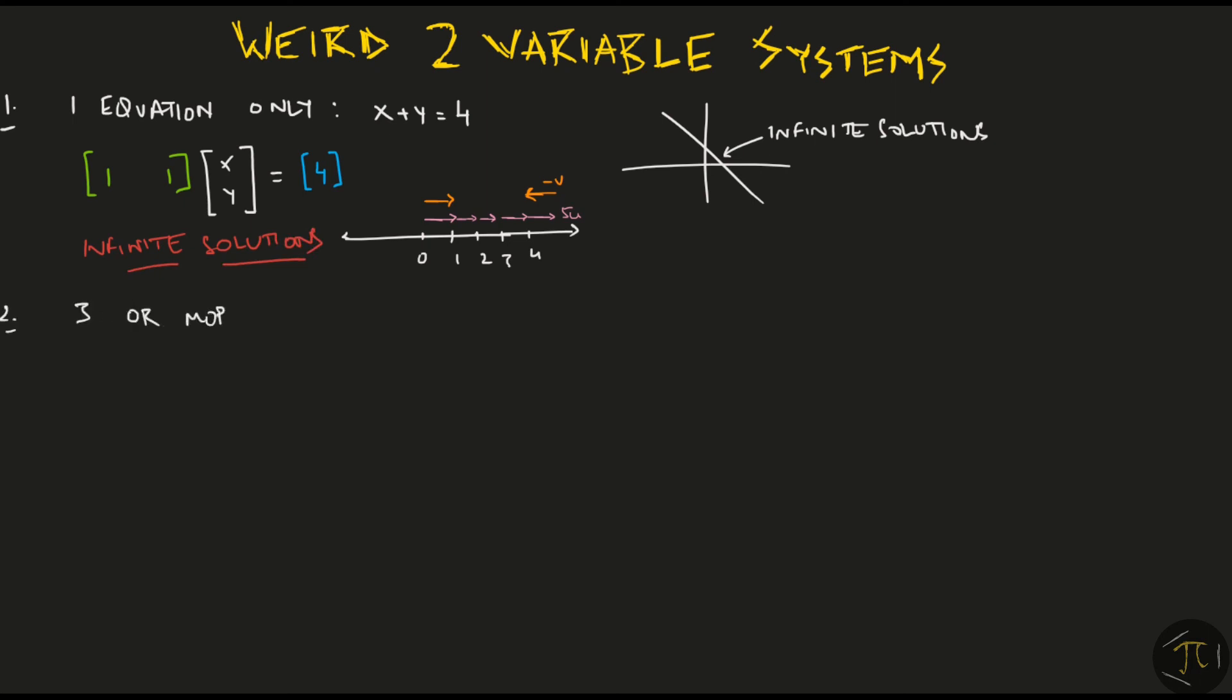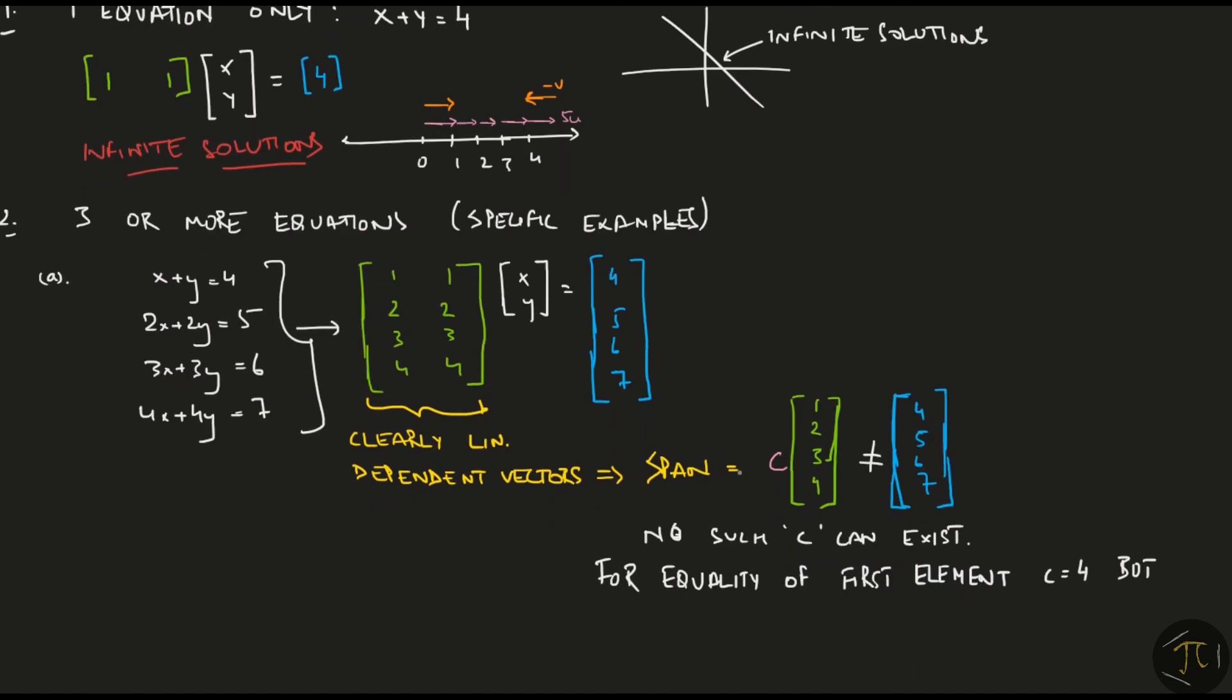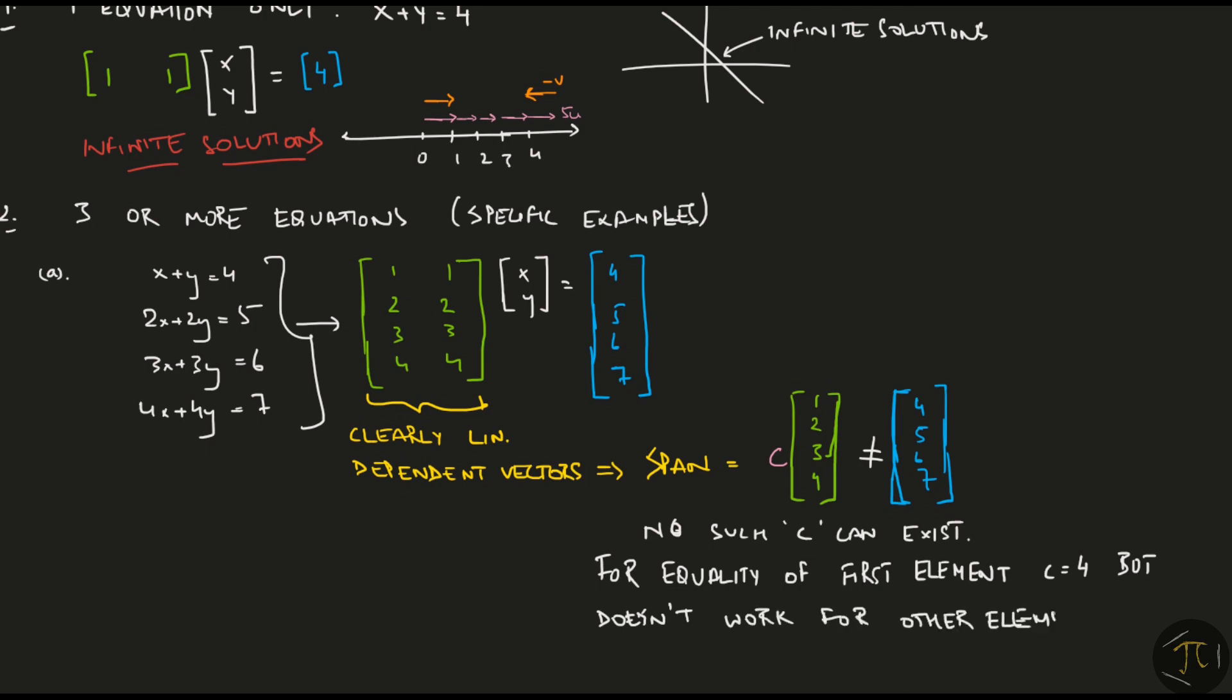Another system could be with 3 or more equations, something like this. This time we have two vectors that are 4 dimensional vectors. Making a column picture isn't easy, but you can observe from the matrix that they are linearly dependent vectors. Their span is just a scalar multiple of this vector. No value of c can ever give me the output vector. I know this because for the equality of the first element, c must be 4, but this value of c doesn't work for the other elements then.